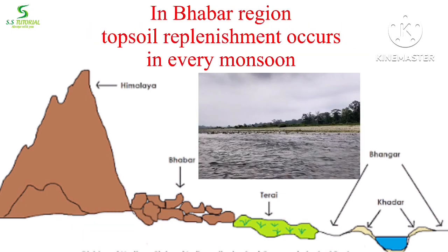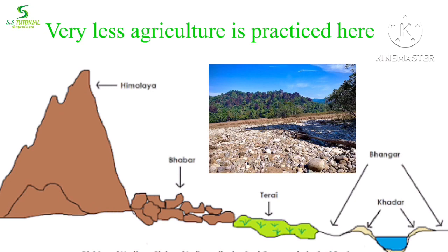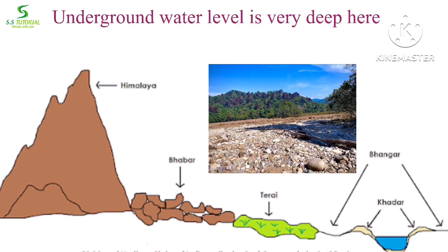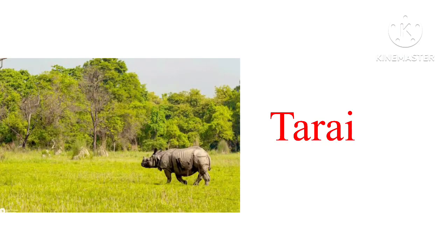In the Bhabar region, topsoil replenishment occurs every monsoon, making this area fertile. However, since it remains dry throughout the year except monsoon and is full of pebbles, very little agriculture is practiced here. The underground water level is very deep in this region, so only long-rooted giant trees grow here.